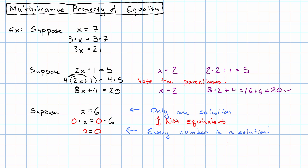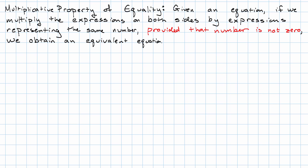So we're ready to state this rule explicitly as well. This is the multiplicative property of equality. Given an equation, if we multiply the expressions on both sides by expressions representing the same number, provided that number is not 0, we obtain an equivalent expression.